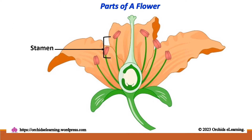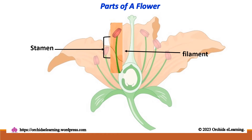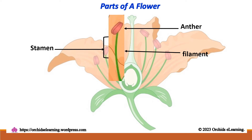Stamens are the male reproductive parts of a flower. Each stamen has two parts: a thin stalk called the filament, and a knob-like structure called the anther. The anther produces a powdery substance called pollen.